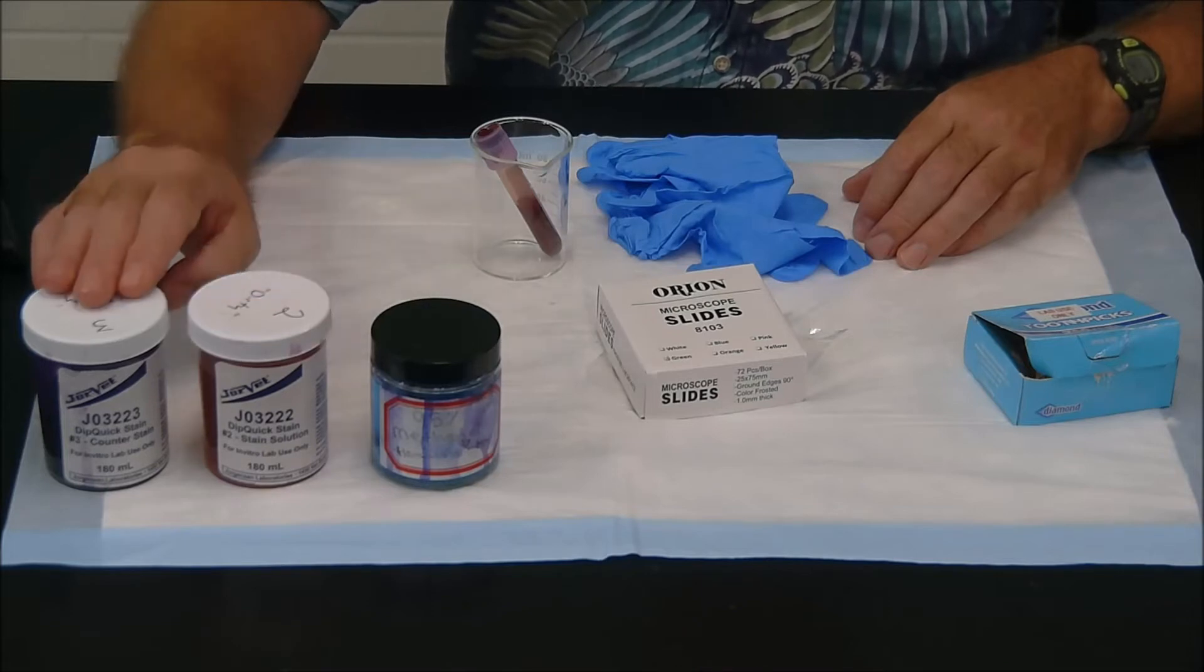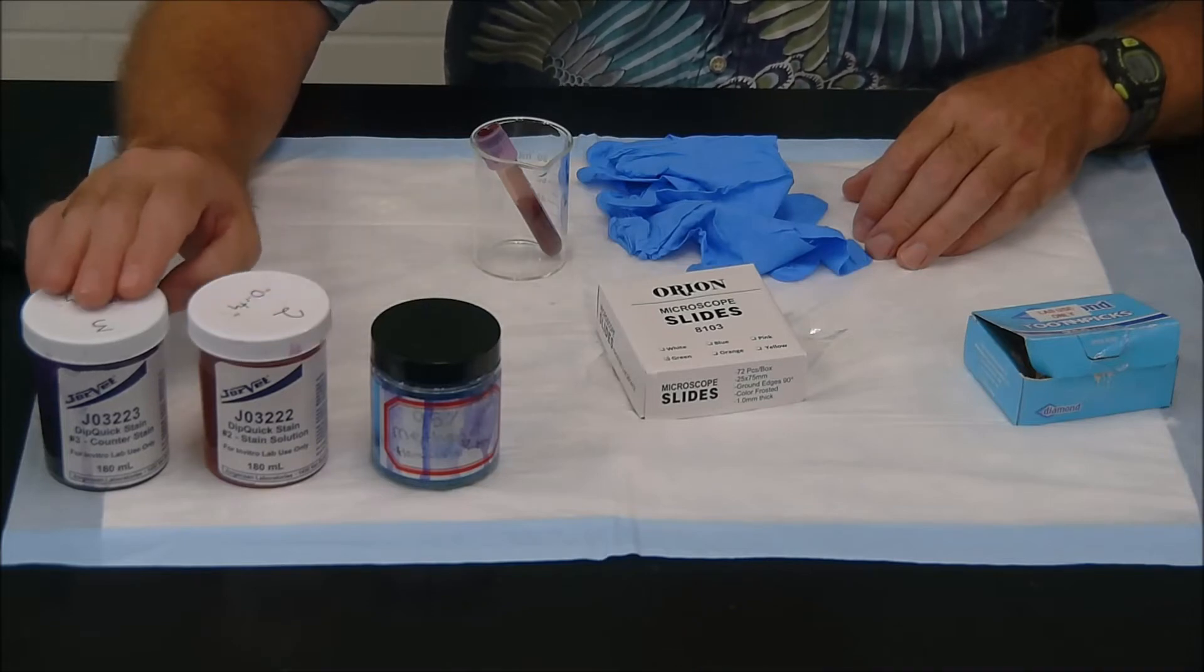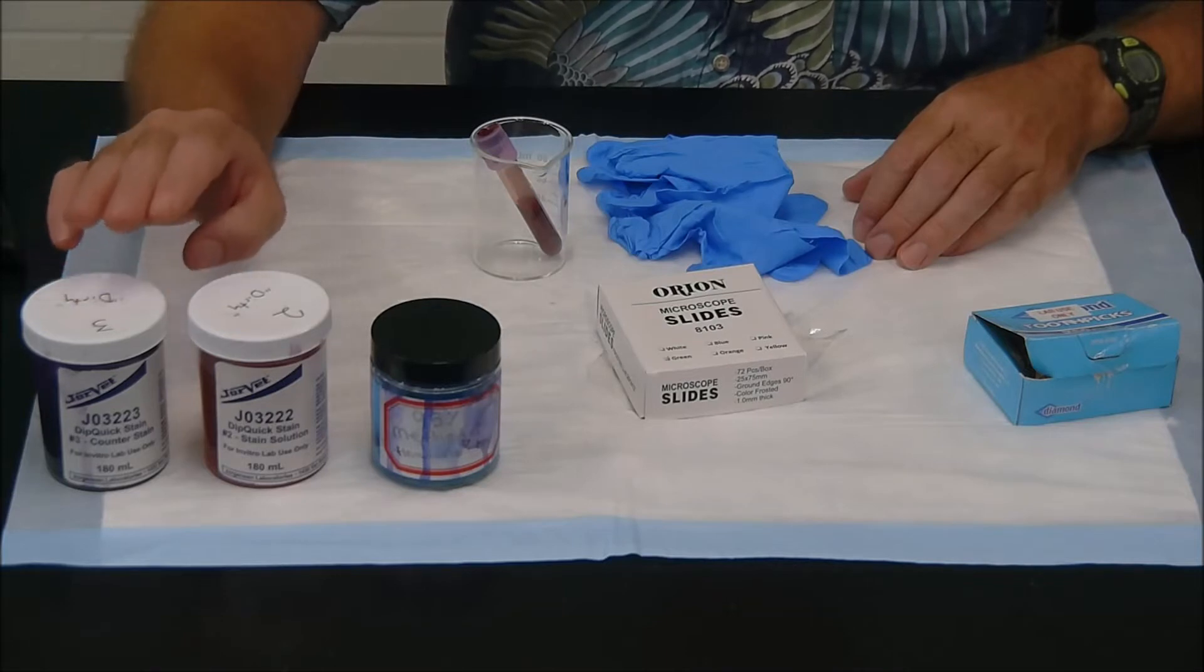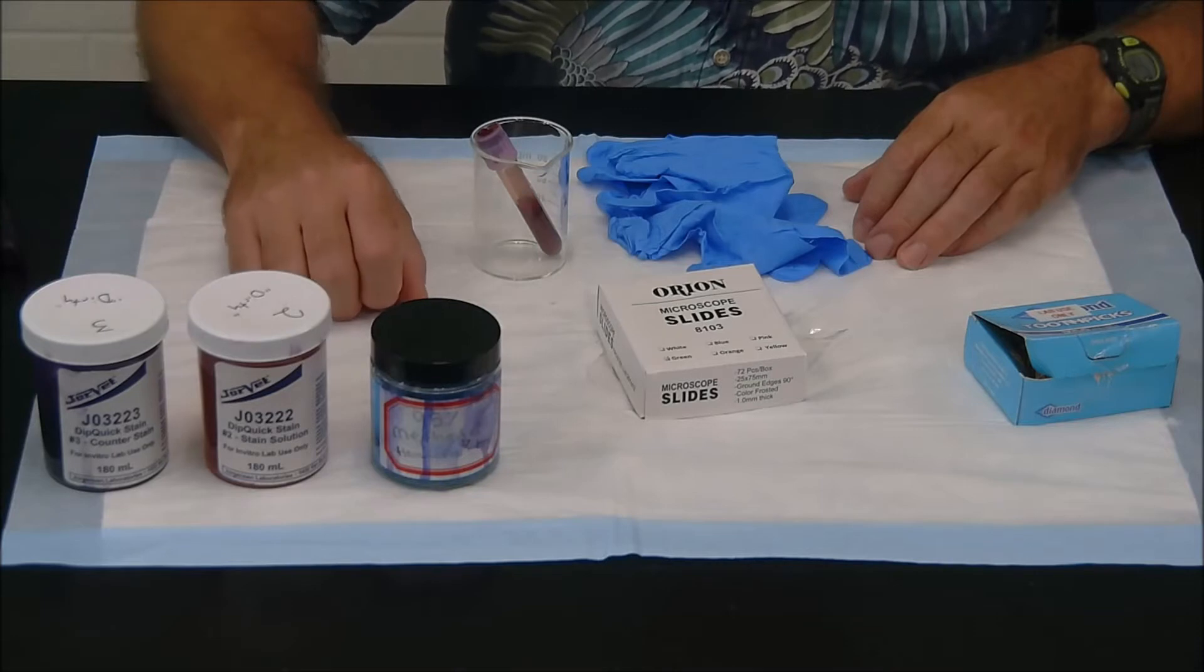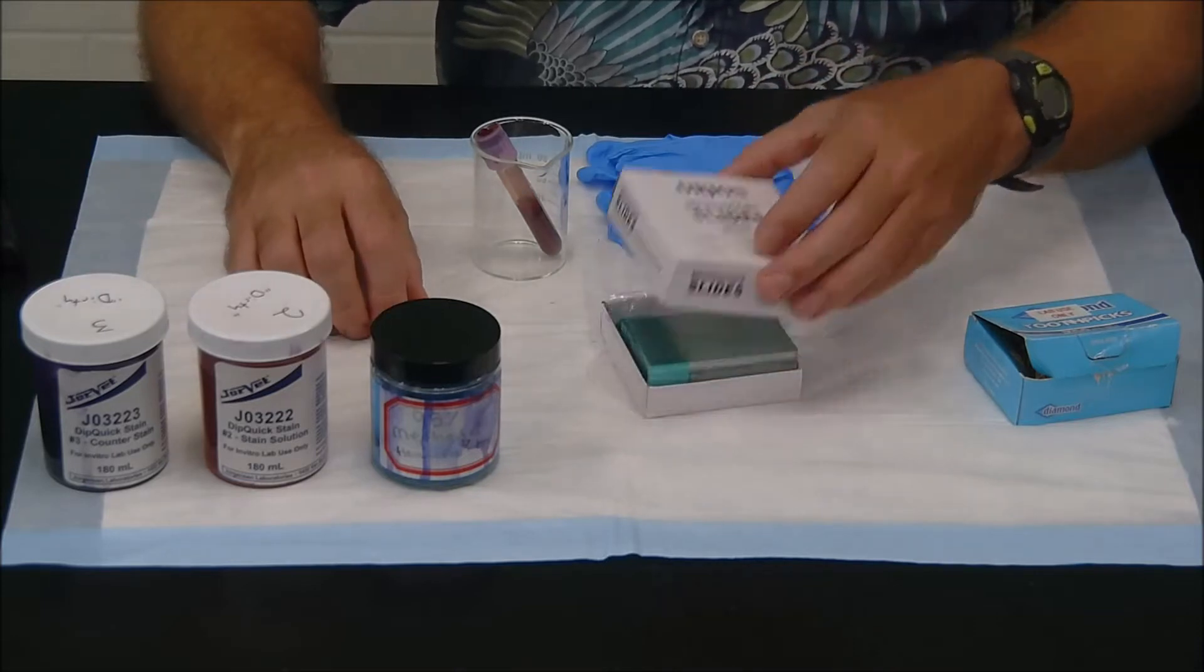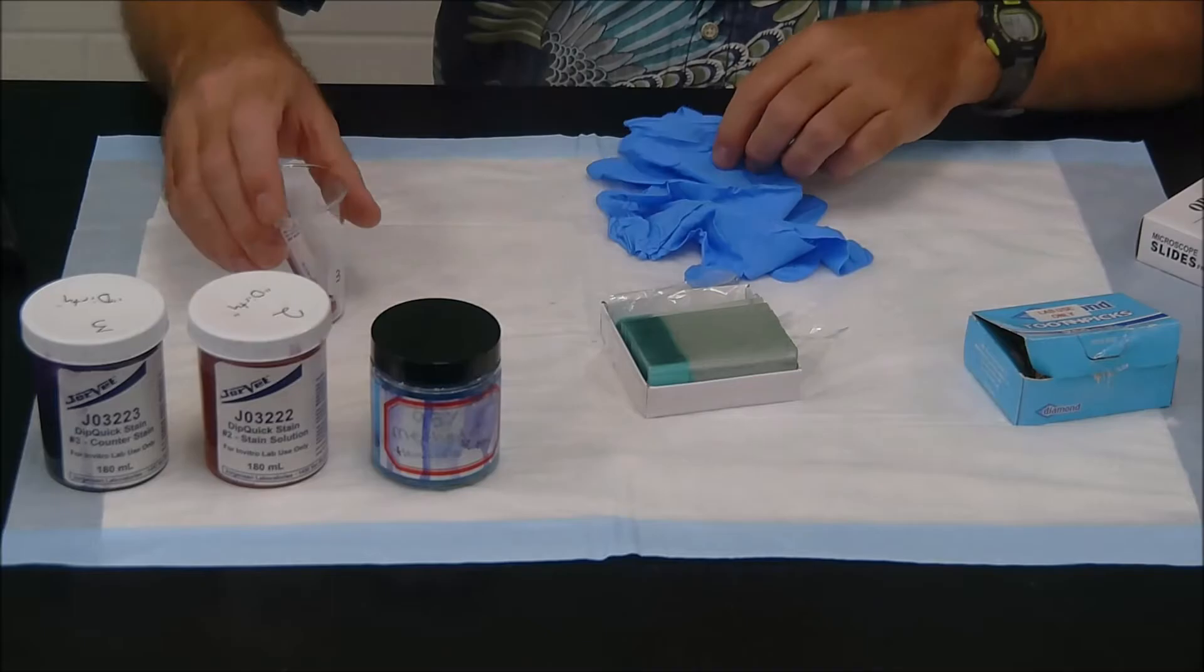And then finally, the third thing here, this stain is probably methylene blue or something like that. And that's going to be primarily a nuclear stain. So we're going to fix, stain, stain. But before we can do that, we actually have to prepare our blood smear using some microscope slides. So let's go through that process.